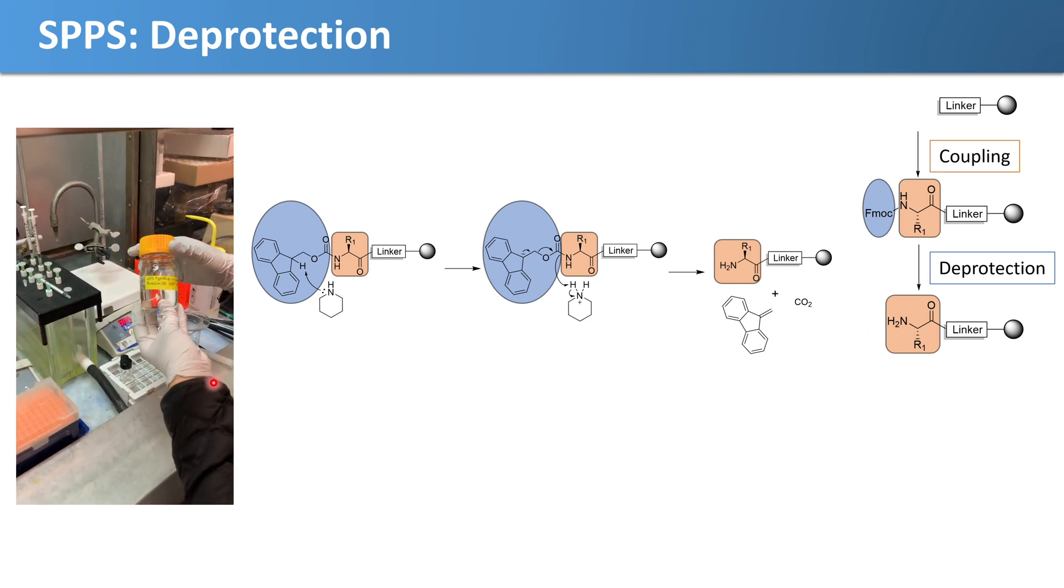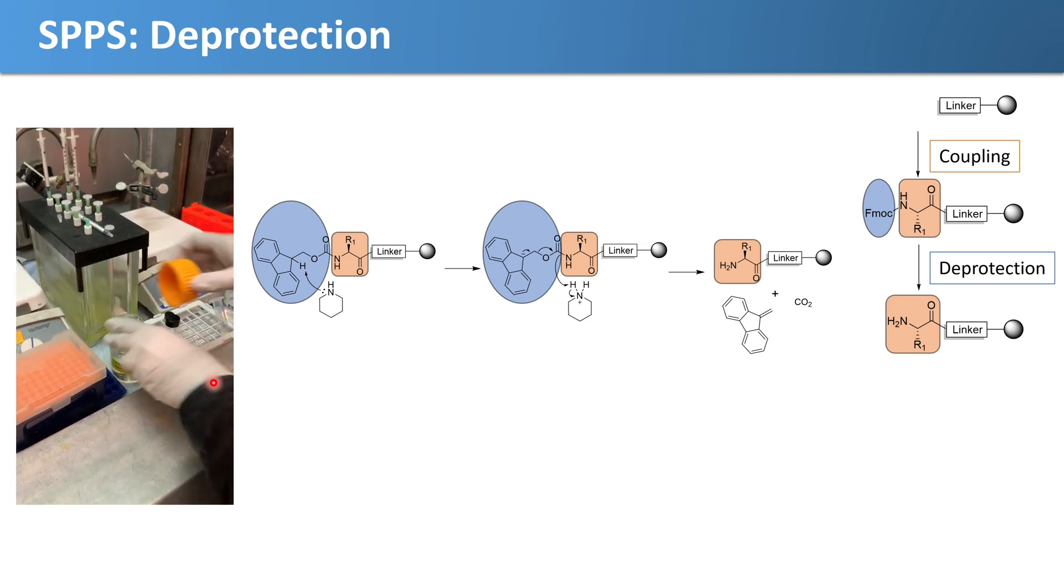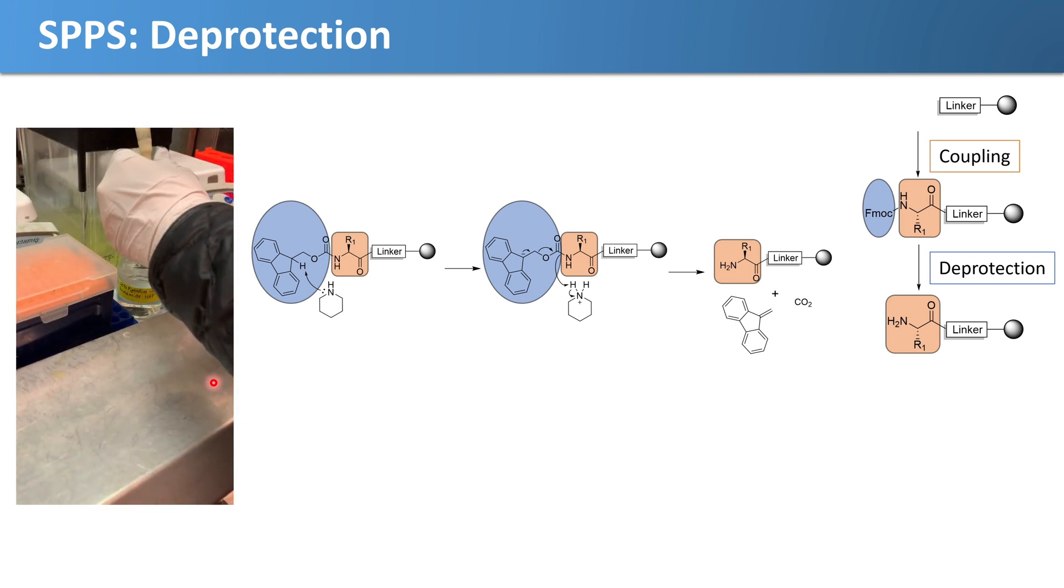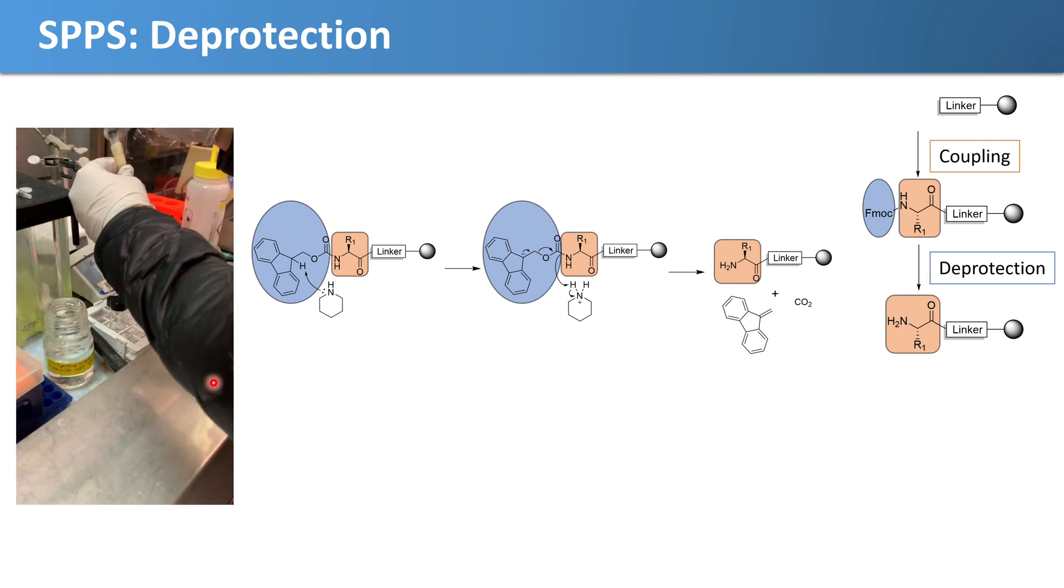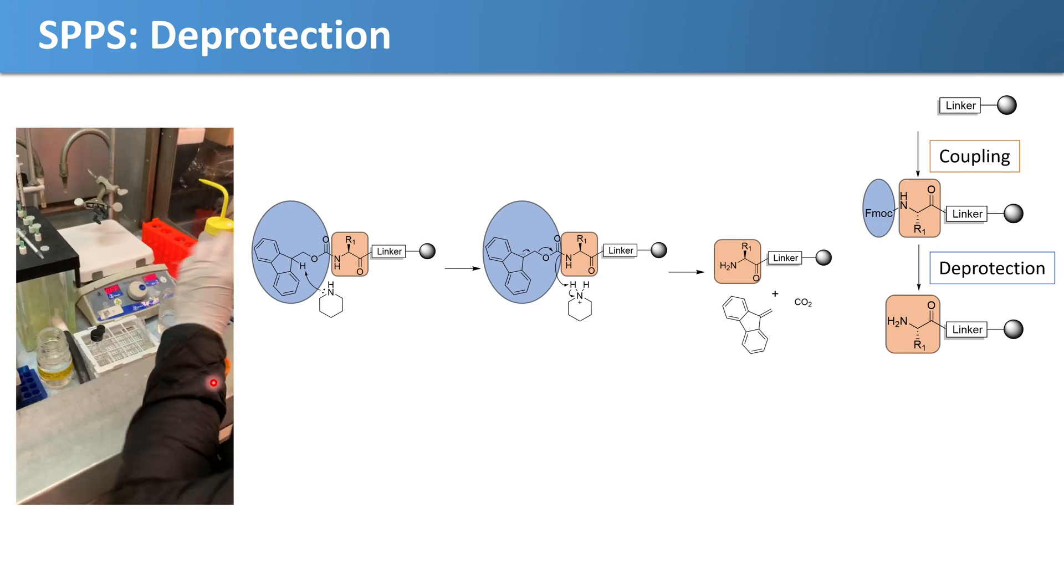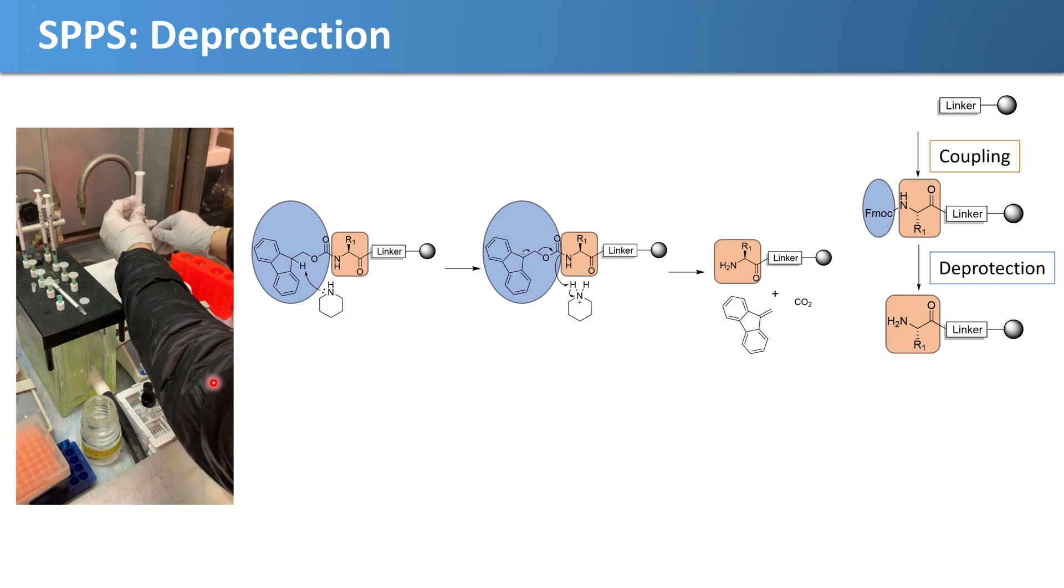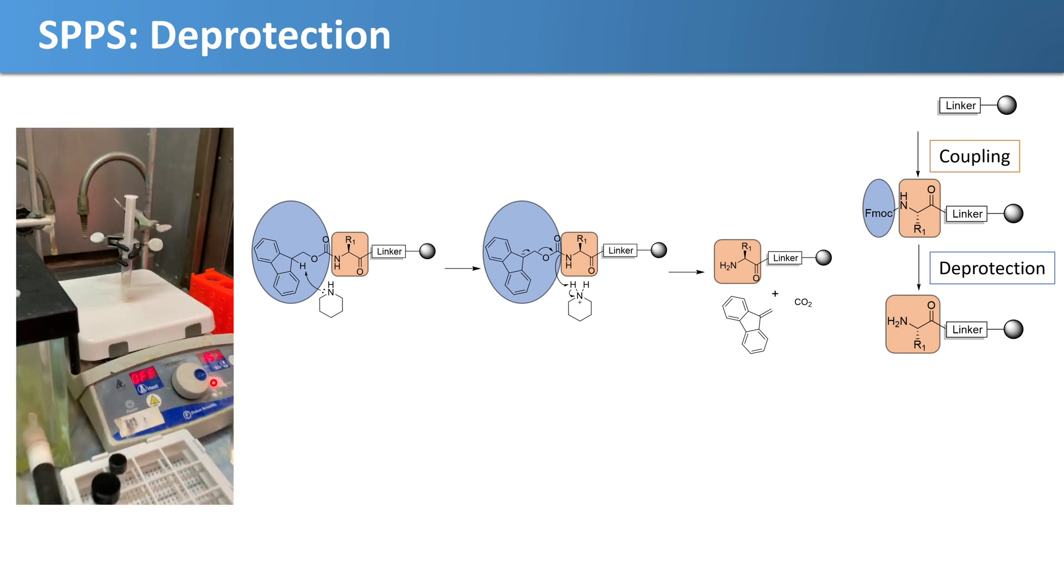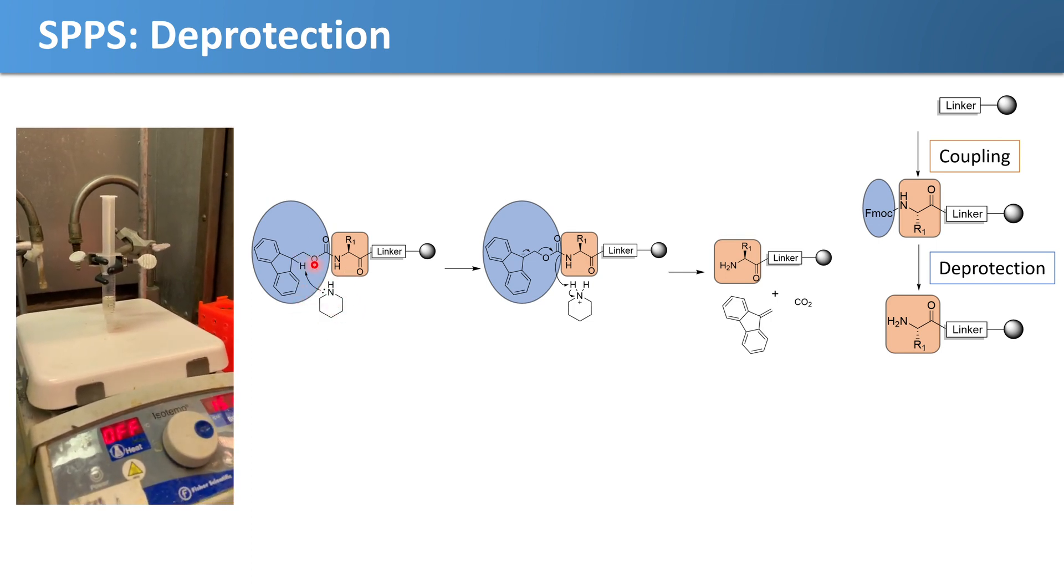This reaction is prompted by a base. Our base is piperidine. What she's adding right now is actually a solution of piperidine in DMF, and she's going to be adding that to our reaction vessel to the growing peptide chain. Then she's going to leave it on the stir plate to stir. In this reaction, our base, the piperidine, abstracts a proton, and then there's this cascade that eventually results in the removal of the FMOC group to release our free amine.